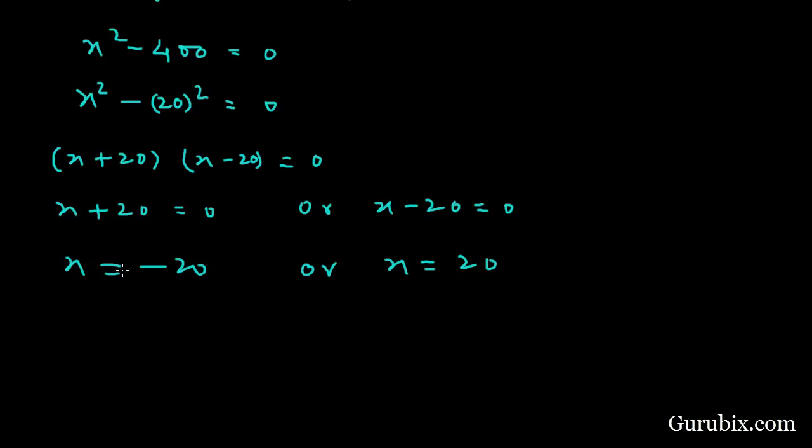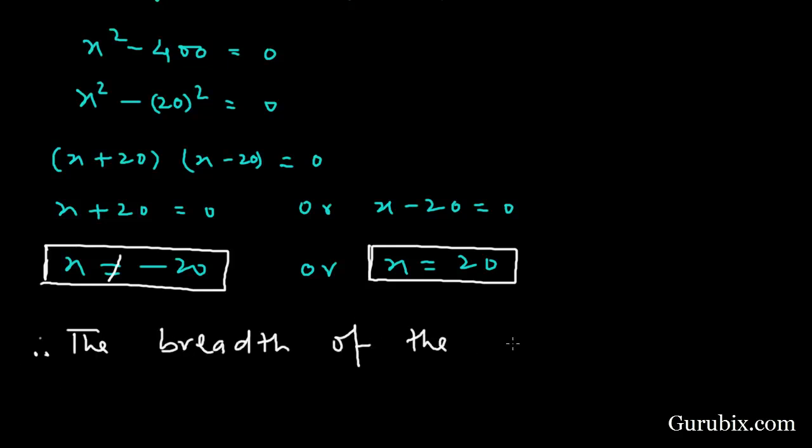This means x plus 20 equals 0 or x minus 20 equals 0. So x equals minus 20 or x equals positive 20. But the length cannot be negative, so x equals minus 20 is not possible. Therefore, x equals 20.